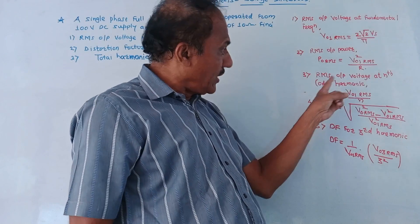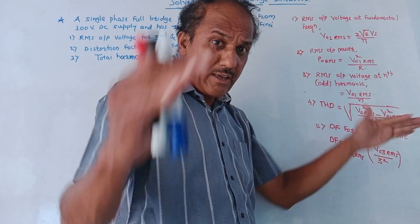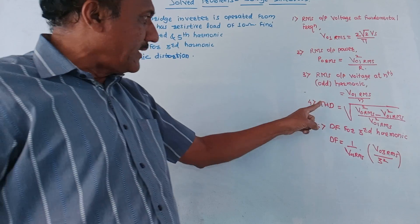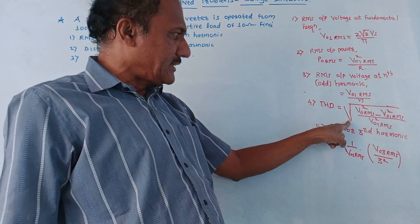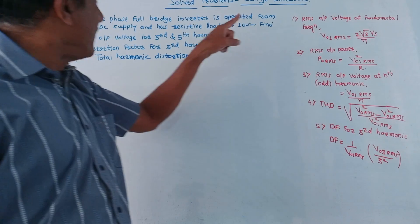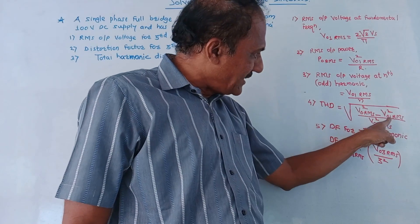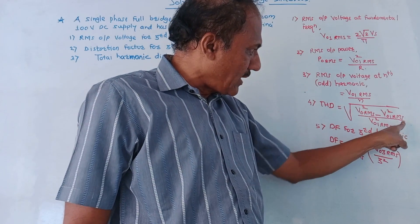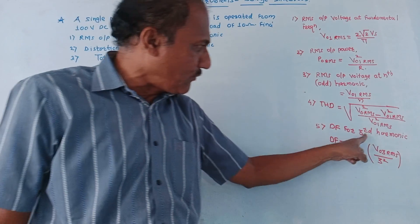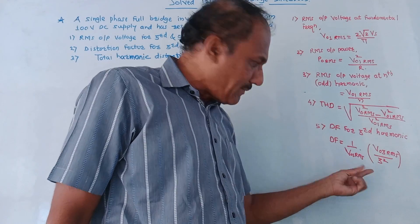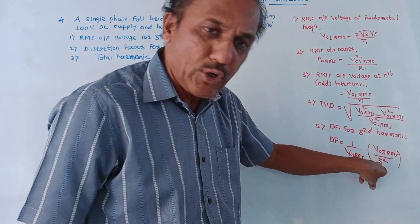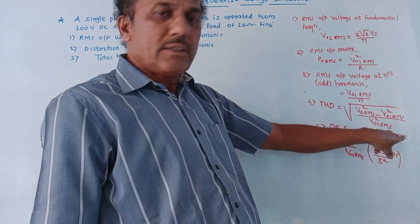Remember the even harmonic concept: even harmonics are zero. This is the distortion factor formula for the third harmonic.